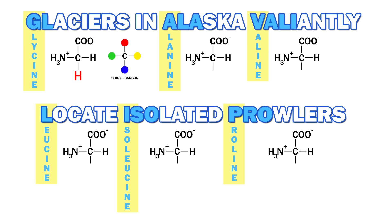Alanine has a methyl group instead of a hydrogen. From here on, the amino acids look a bit like a germinating seed, with the R group as the growing root. In valine, the root splits into two rootlets, both methyls.